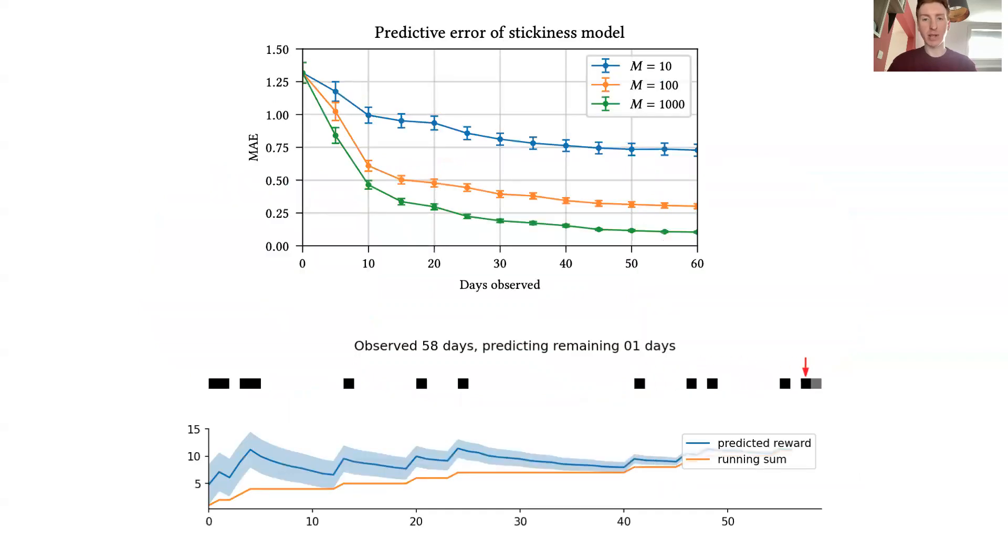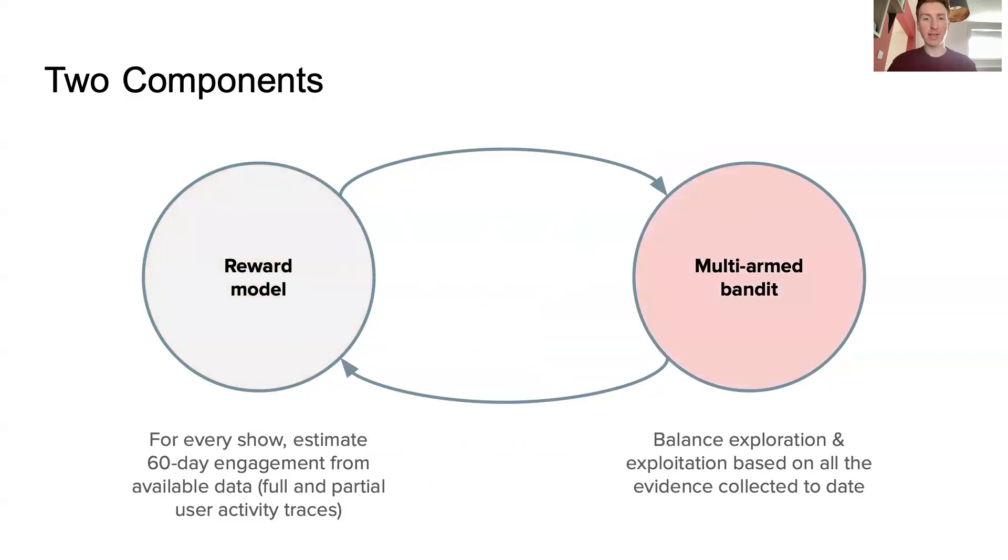However, from the gif below we see that even very early on in the 60-day period, we have a reasonable estimate of the stickiness with associated uncertainty. The second component is the bandit algorithm.